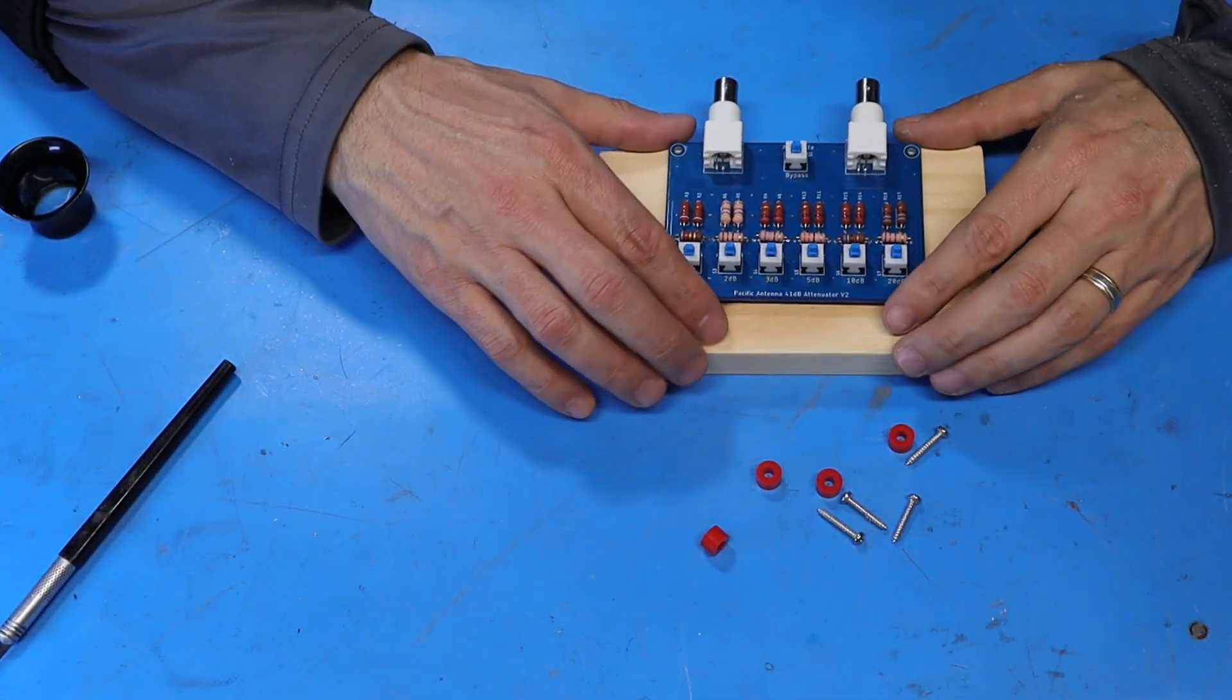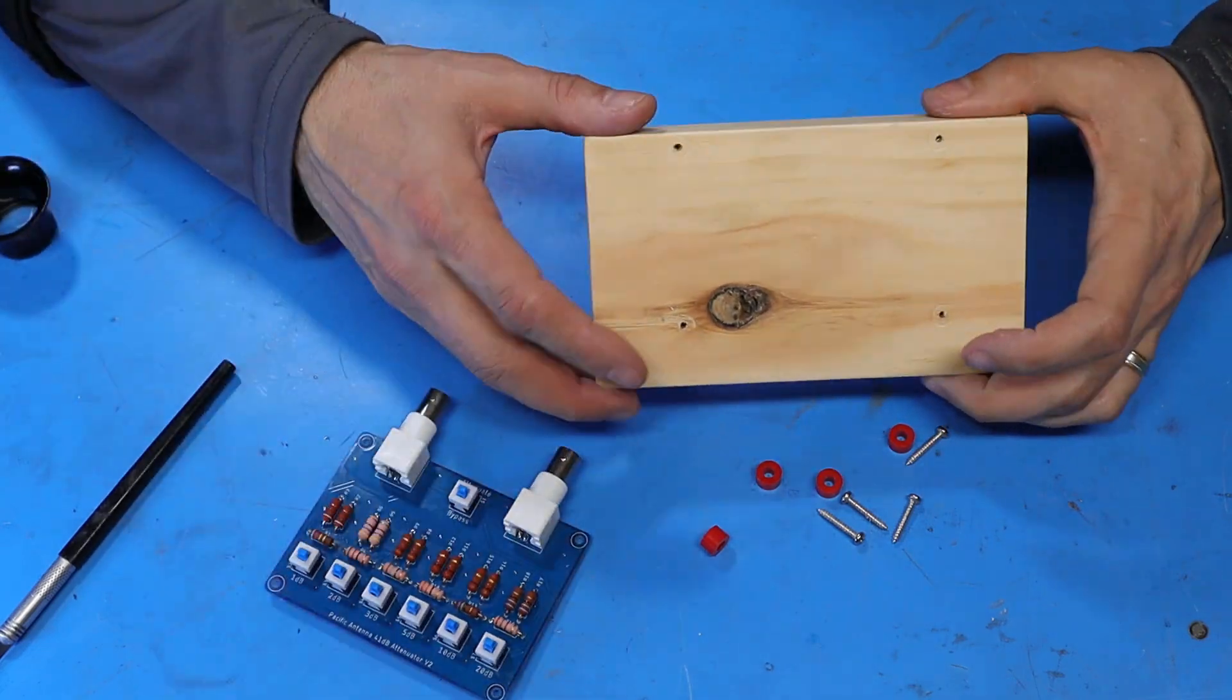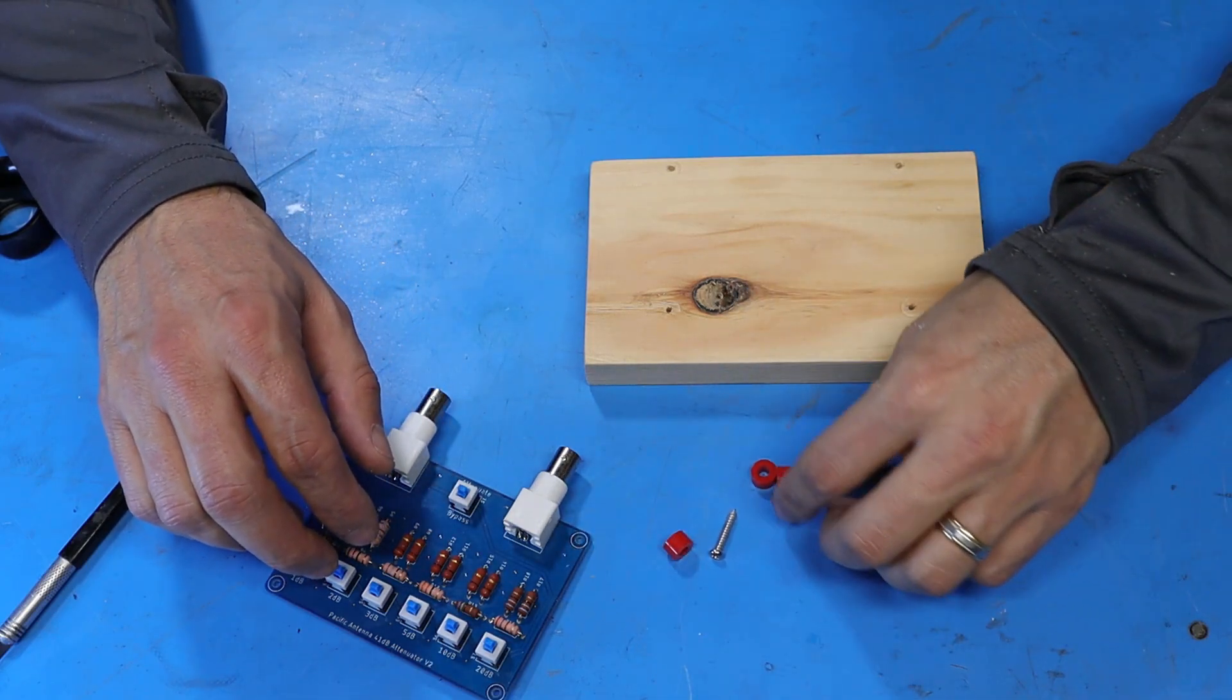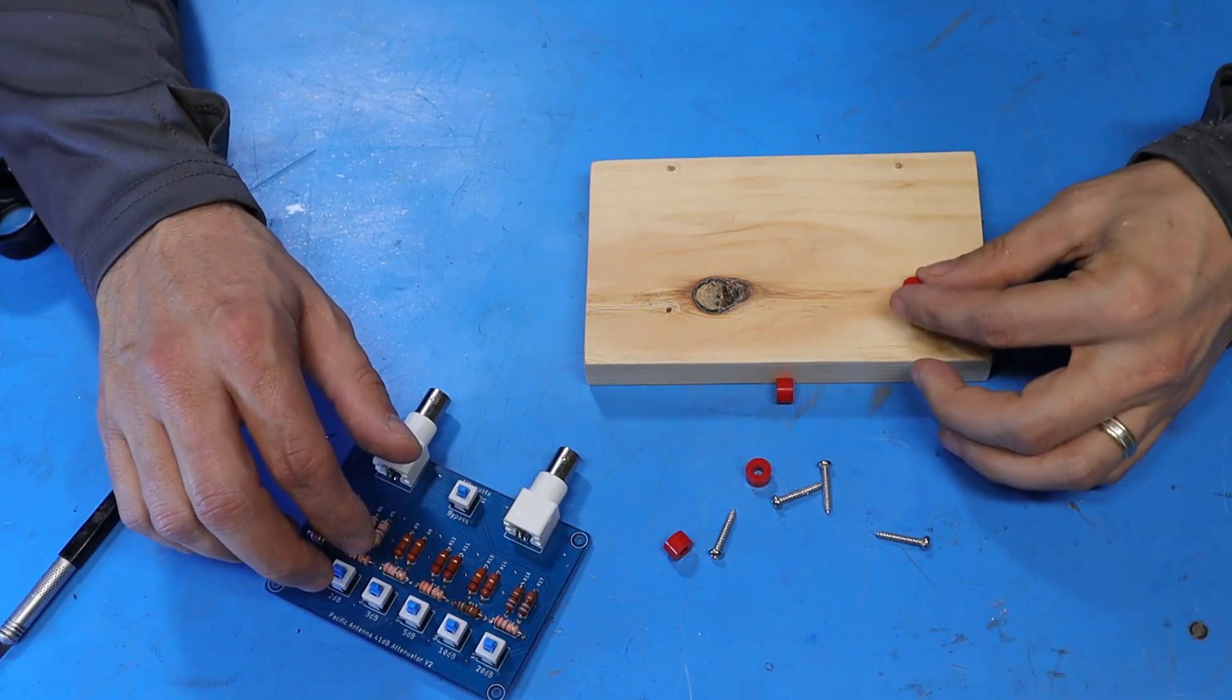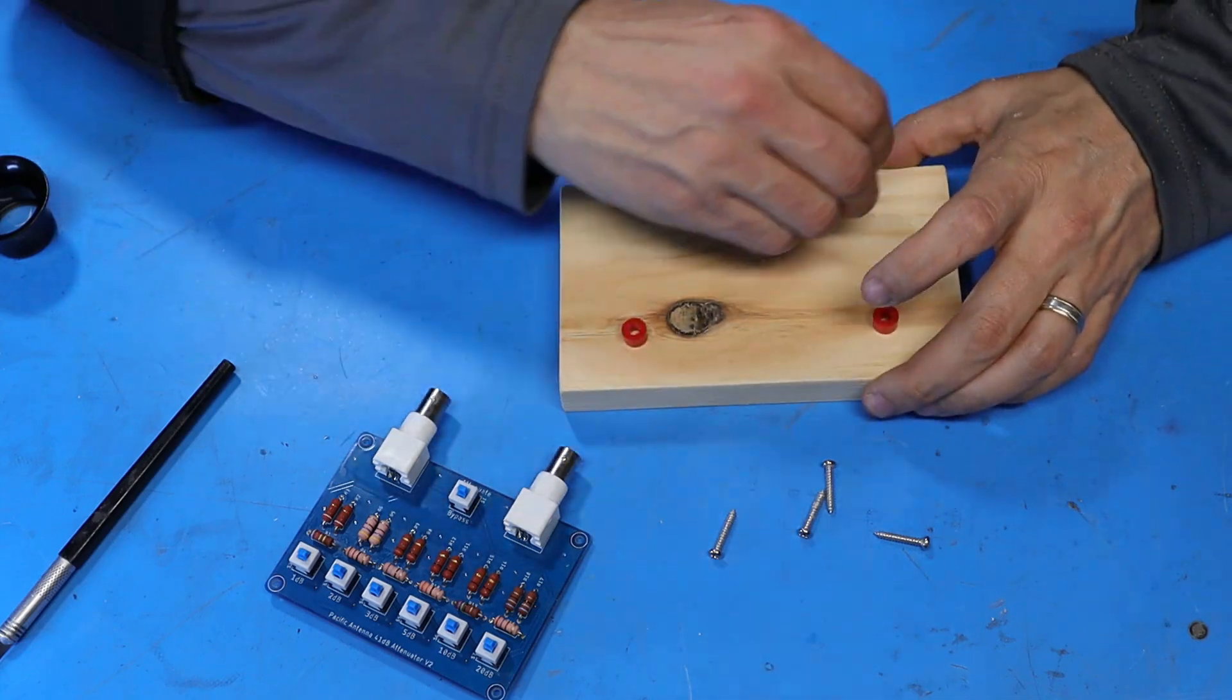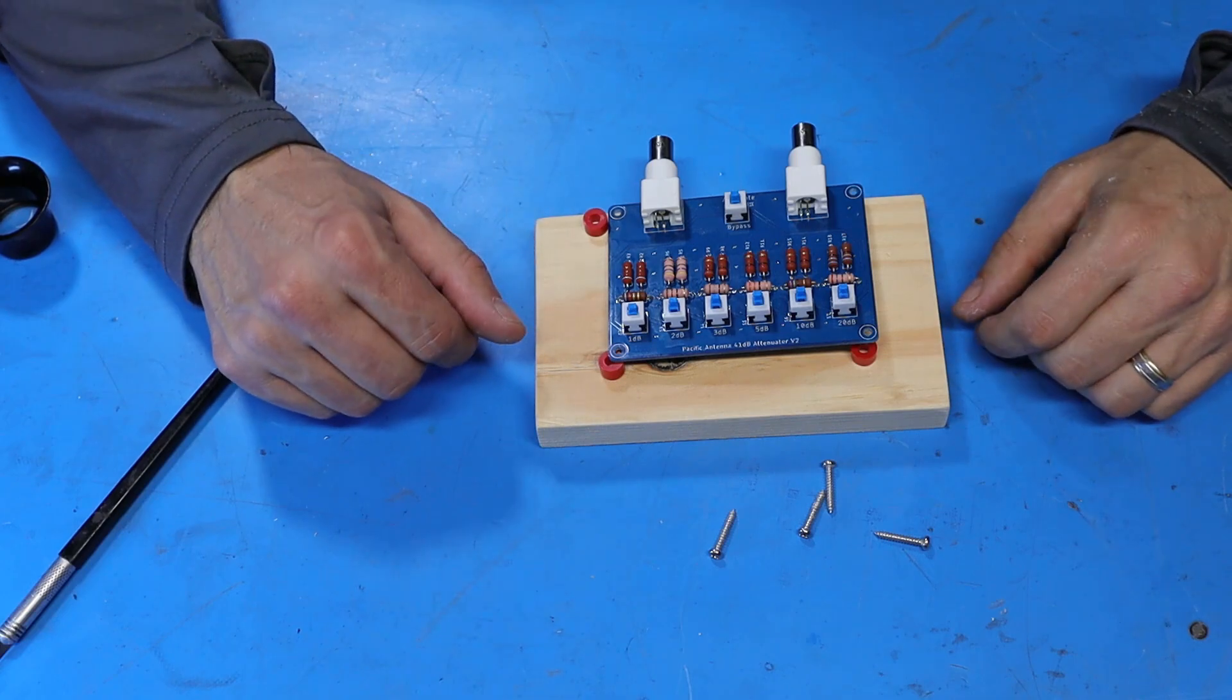I don't have a proper project box or anything to really mount this on so what I found was a piece of scrap wood laying around, some screws that'll fit through those holes, and I found these in my miscellaneous hardware drawer that'll work as standoffs. I should be able to just mount this to this board at least until I can find a better project box or something to mount this in.